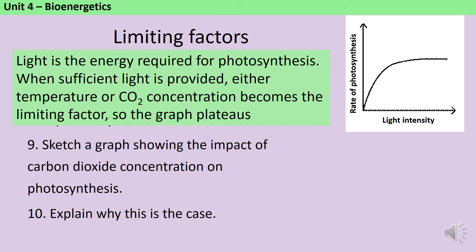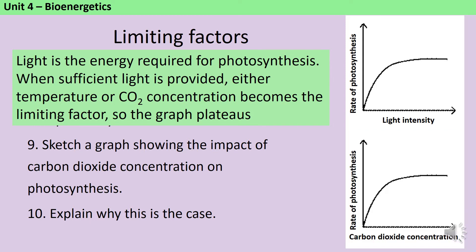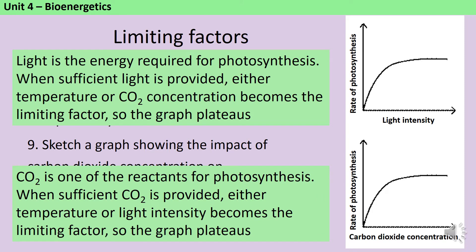The graph for carbon dioxide concentration looks pretty much identical, and again this is for the same reason. In the initial part of the graph, as you increase carbon dioxide concentration, the rate of photosynthesis increases because carbon dioxide is limiting at that point. But eventually you reach a point where the carbon dioxide is in excess, and it doesn't matter how much more carbon dioxide you give — you won't speed up the rate of photosynthesis, because either the temperature or the light intensity is now limiting. So the graph plateaus.